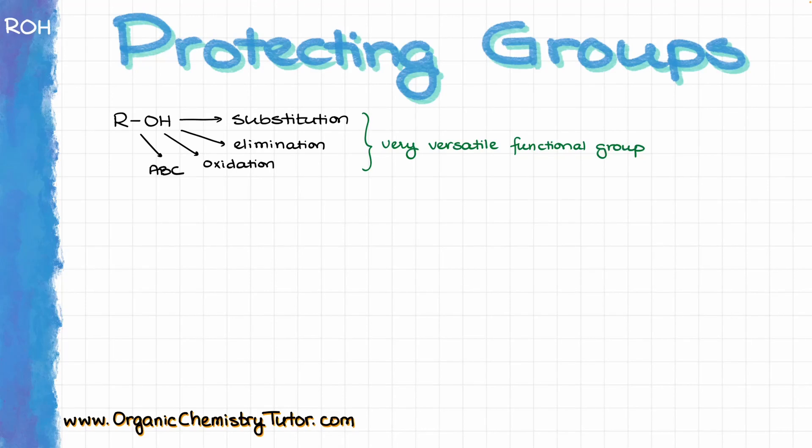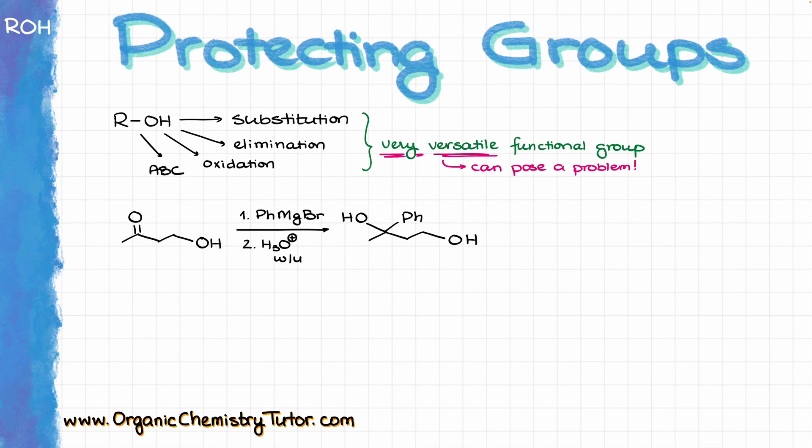Alcohol protecting groups are a pretty big deal in organic chemistry. The alcohol functional group is very versatile in terms of its reactivity and the chemical transformations it can participate in. And precisely this high chemical reactivity is often a problem when we are trying to perform some sort of chemistry and an alcohol functional group just interferes with that.